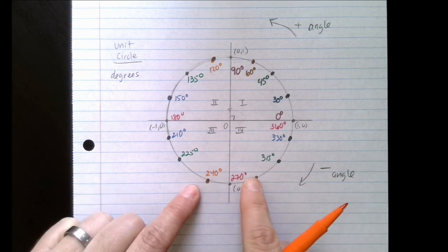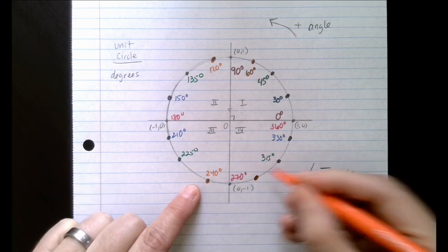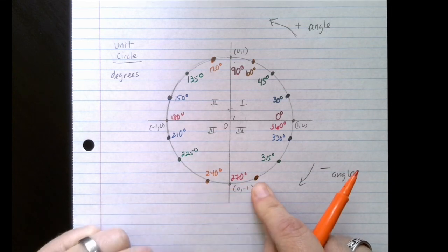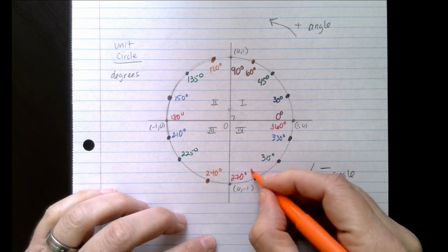If I take this point and reflect over the y-axis, now I'm here. So this is 30 degrees past 270. So 30 degrees plus 270 is 300.